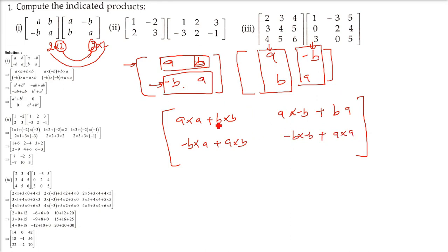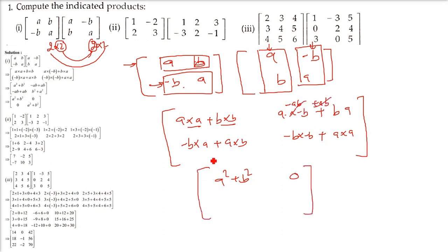So what do you get? This is a squared, this is b squared — so a squared plus b squared. This is minus ab plus ab, which gives you zero. Then we have minus ba plus ab — again zero. And minus b squared becomes b squared, and a squared is a squared, so a squared plus b squared. This is your answer.